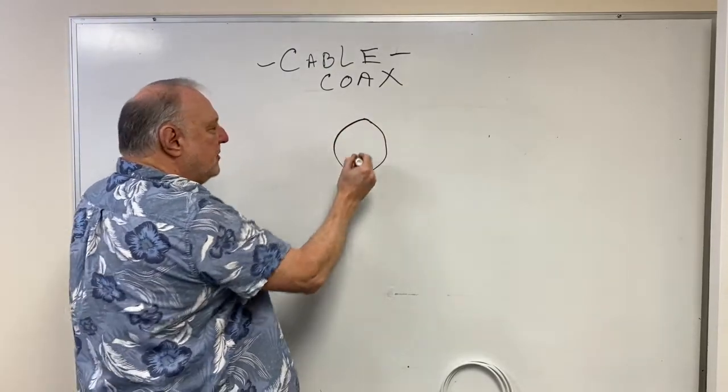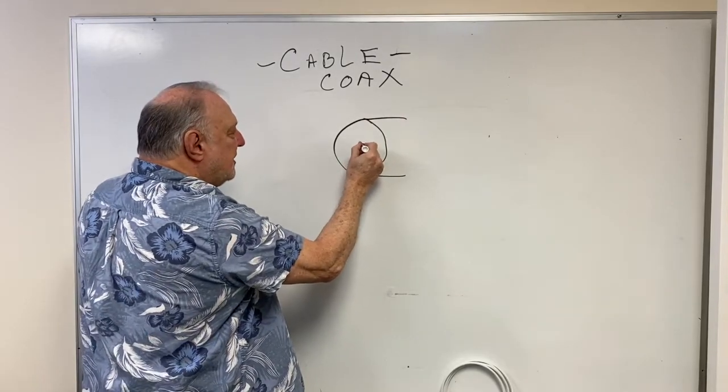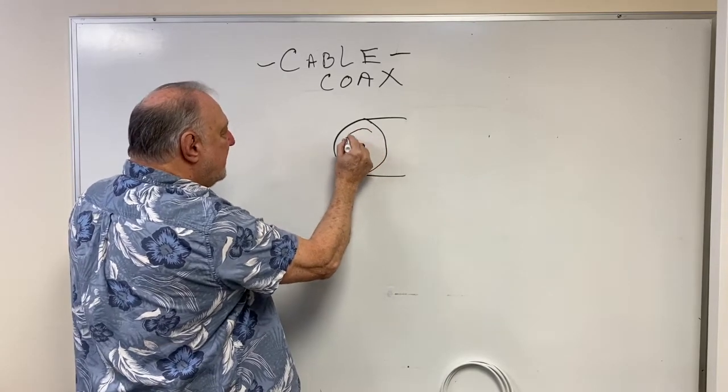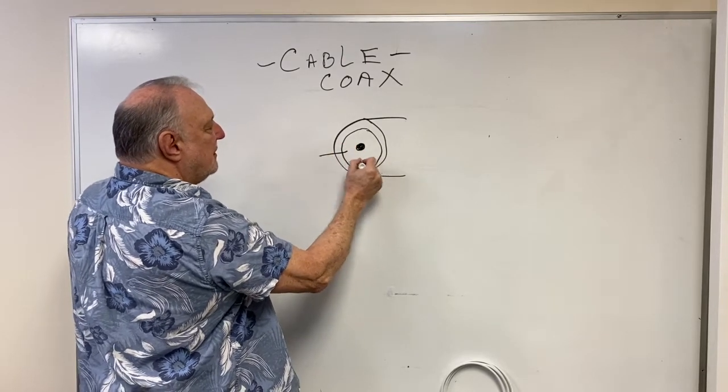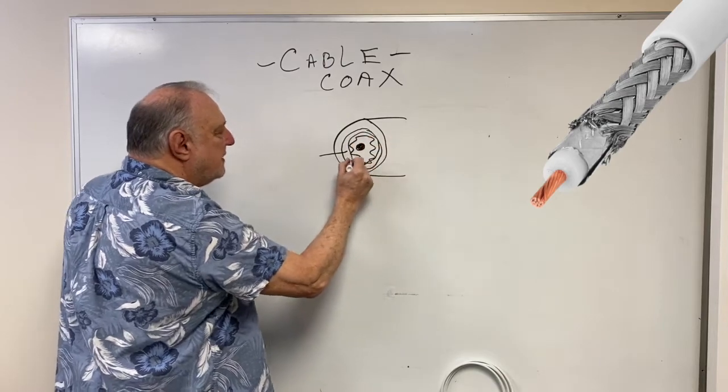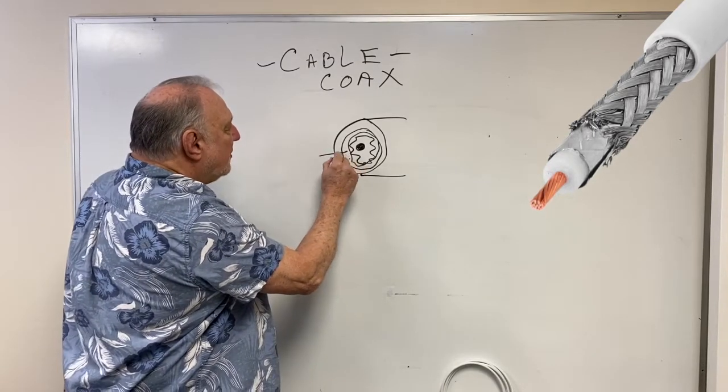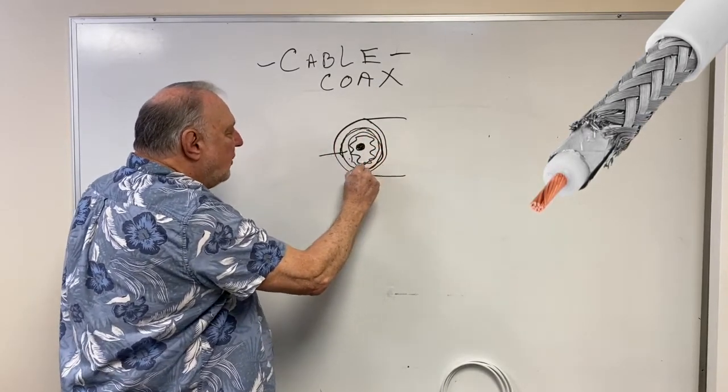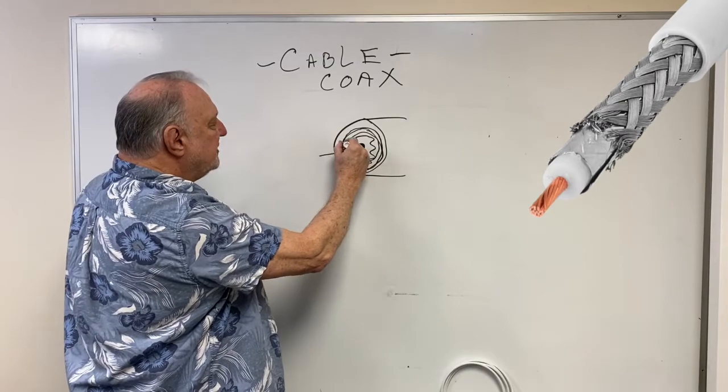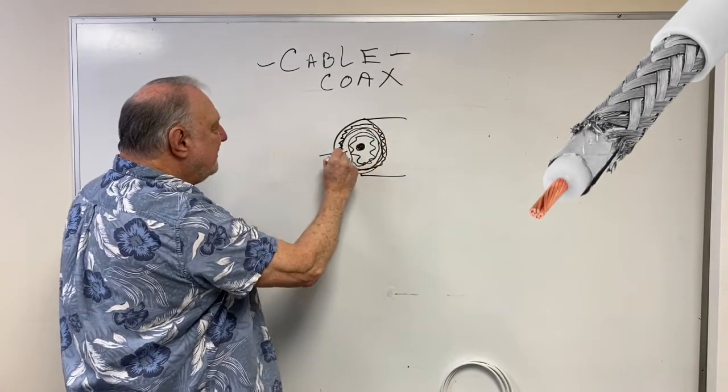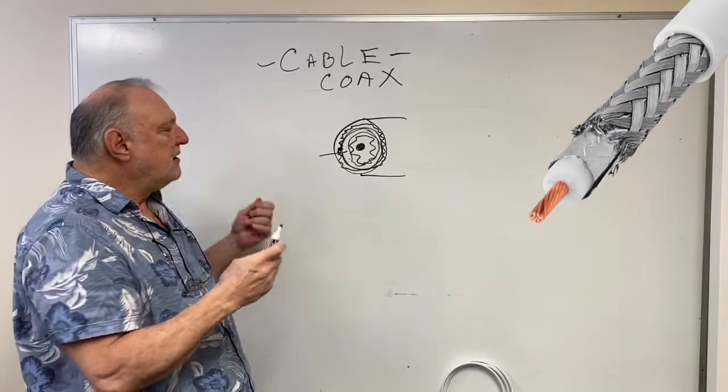A coaxial cable consists of this outer shield, it has a center conductor, it then has typically a plastic or Teflon area, this whole area in here is plastic or Teflon, that's the insulator and spacer, to space it out to where we have 100% foil insulation around this. And then in the outer area, the outer area has a tinned braid.